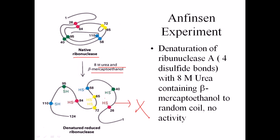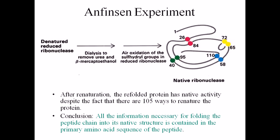After obtaining the denatured, reduced ribonuclease, Anfinsen performed dialysis to remove all the urea and also remove the beta-mercaptoethanol. After removing these agents through the dialysis step, he air-oxidized all the sulfide linkages. The hypothesis was that the sulfur groups would start to form disulfide linkages with the help of air oxidation.